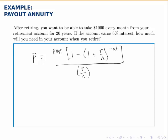P for present value, because at the moment of retirement the account holds a certain lump sum. And then PMT, the payment, is the regular amount that you withdraw.